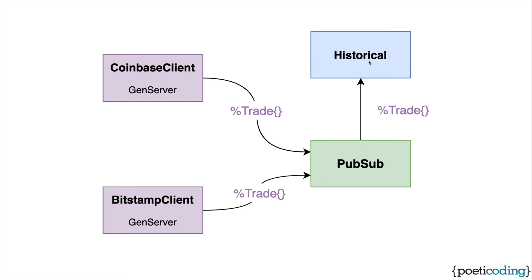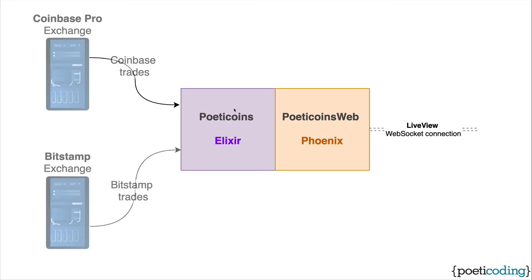We use a historical process to keep the last trades in memory. To access these core functionalities from the web part, we use a Poetic Coins context, which is a module that acts as a public interface, hiding the complexity of the underlying parts.